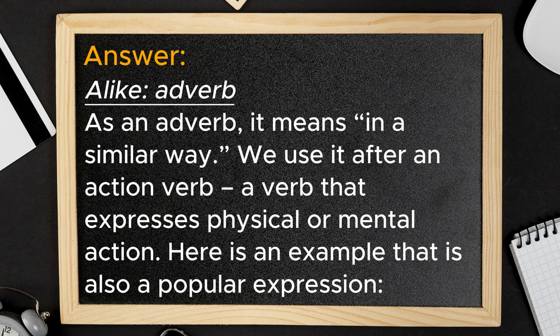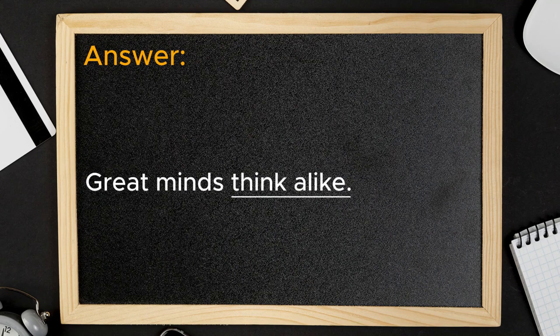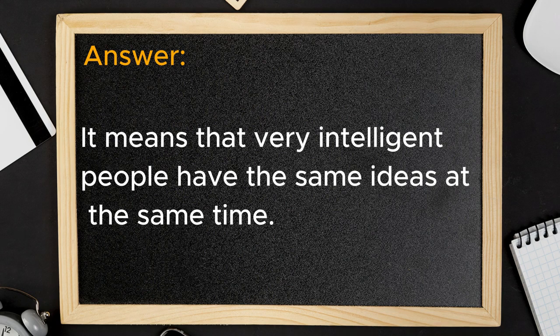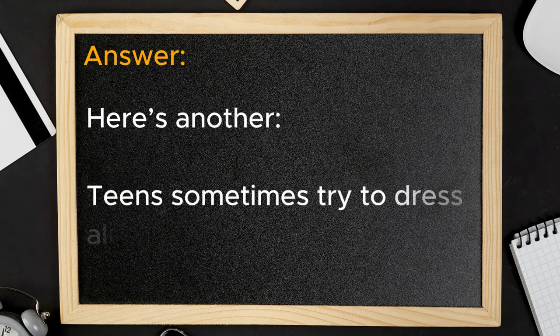Here is an example that is also a popular expression. Great minds think alike. It means that very intelligent people have the same ideas at the same time. Here's another. Teens sometimes try to dress alike.